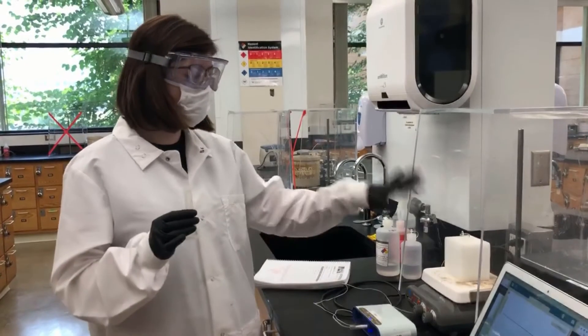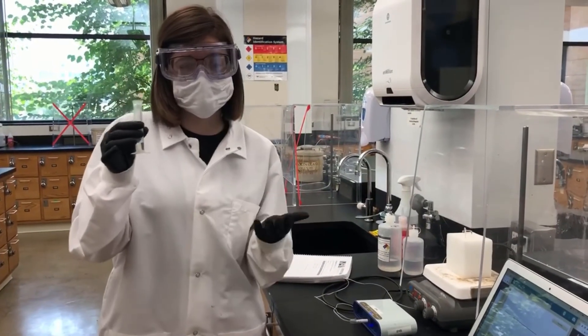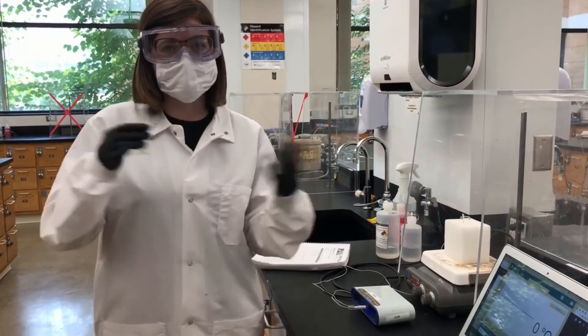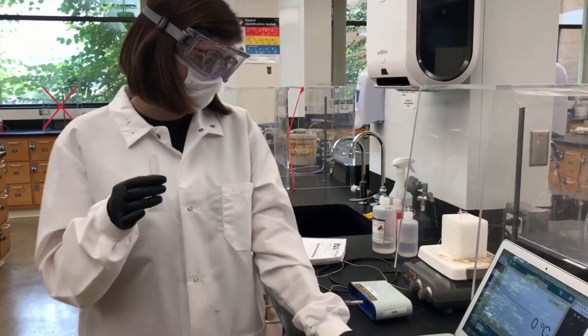I'm starting out with 8 milliliters of the bleach solution and 2 milliliters of my unknown because that's one of the stoichiometric ratios that could give me the highest temperature change. And I'm just going to press start on here.